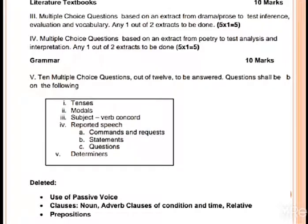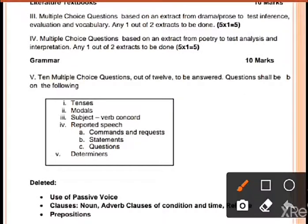Objective type questions will be asked in literature. The first question will be from drama or prose. Two extracts will be given. Out of those 2, we will attempt only one. In this 1 extract, there will be 5 questions, 1 mark each. Total marks will be 5.